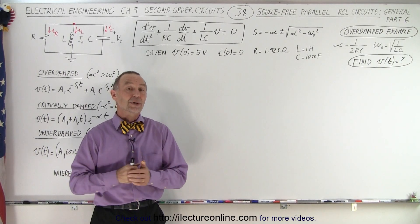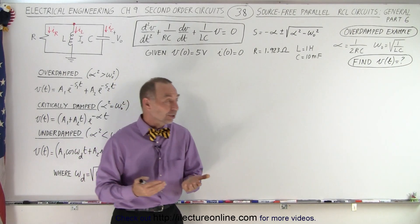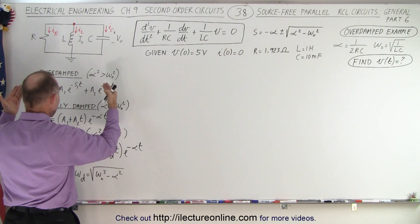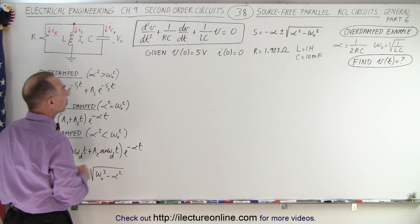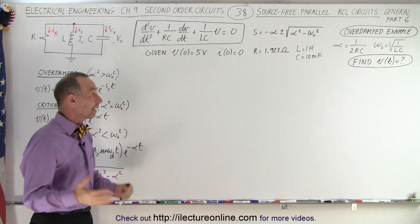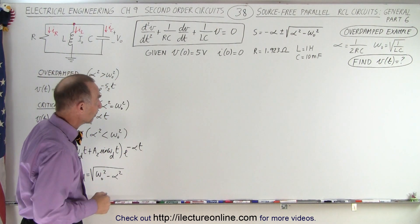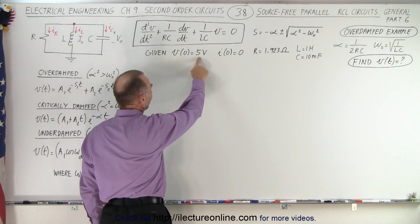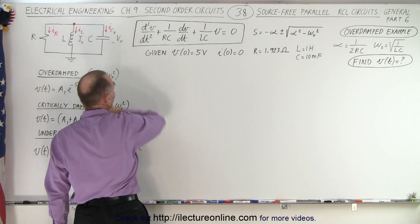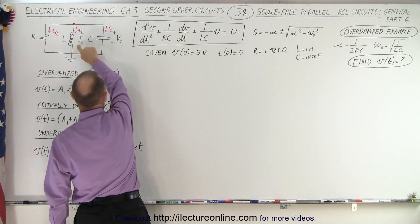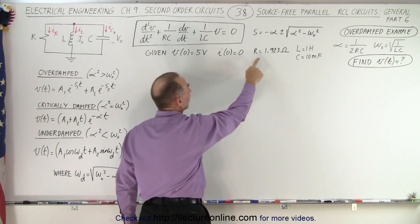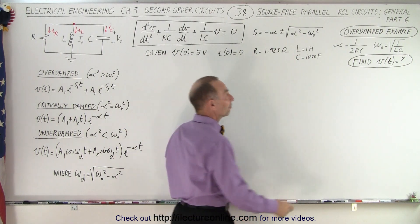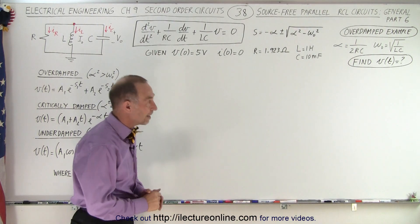Welcome to our lecture online. Now we can work out an example of how to find the actual equation of an overdamped case when we're given some initial conditions and we know the values for the resistance, the inductor, and the capacitor. We're given that the initial voltage when time equals zero is five volts — that's the voltage across the capacitor. The current through the inductor at t equals zero is equal to zero. We're given the value for the resistance, inductance, and capacitance. So now we're trying to find the voltage as a function of time.